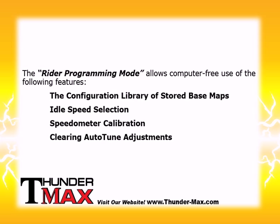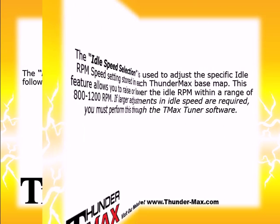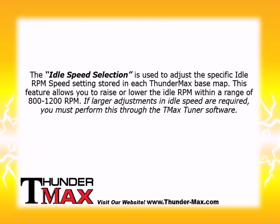And clearing auto-tune adjustments. The idle speed selection is used to adjust the specific idle RPM speed setting stored in each Thundermax basemap. This feature allows you to raise or lower the idle RPM within a range of 800 to 1200 revolutions per minute. If larger adjustments in idle speed are required, you must perform this through the TMAX tuner software.